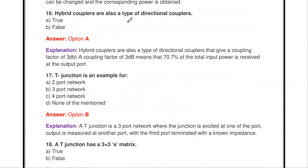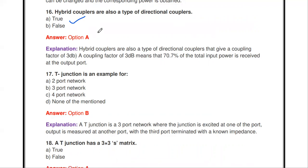Next question: hybrid couplers are also a type of directional coupler — true or false? It is true. The hybrid coupler is a type of directional coupler that gives a coupling factor of 3 dB, meaning 70.7% of the total input power is received at the output port.